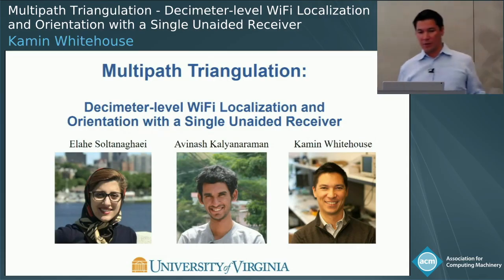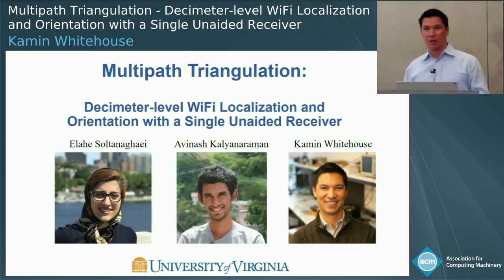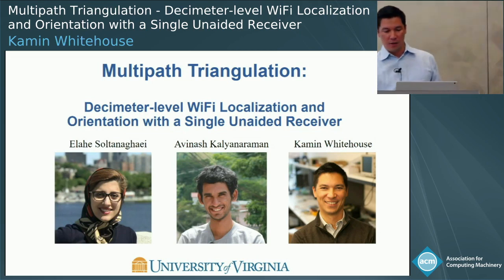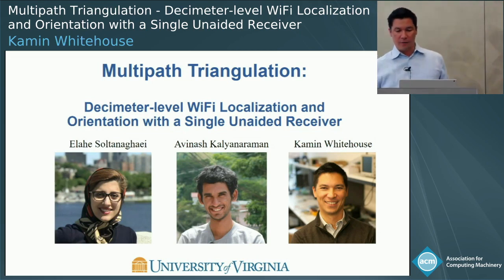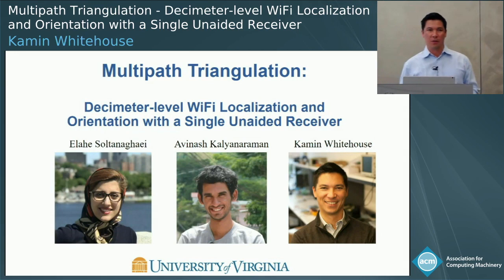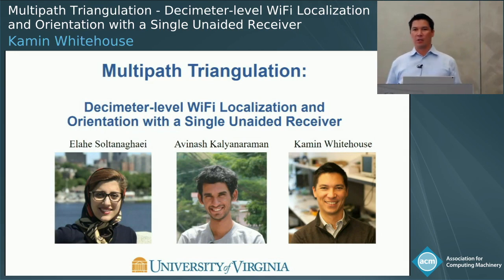I'm going to tell you about a new technique called multipath triangulation that allows a Wi-Fi device to determine another node's location and orientation by overhearing as little as one packet.